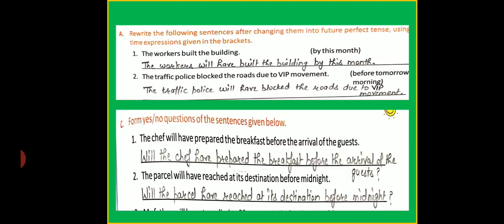Look at page number 131 and 132. In part A, you have to rewrite the following sentences after changing them into future perfect tense with the help of given words in the bracket. For example: the workers built the building — the workers will have built the building by this month. The traffic police blocked the roads due to VIP movements before tomorrow morning — the traffic police will have blocked the road due to VIP movements before tomorrow morning. In part C, you have to frame yes/no questions. The chef will have prepared the breakfast before the arrival of the guest — will the chef have prepared the breakfast before the arrival of the guest? The parcel will have reached its destination before midnight — will the parcel have reached its destination before midnight?